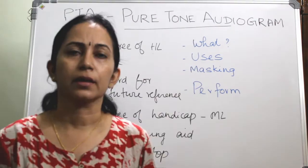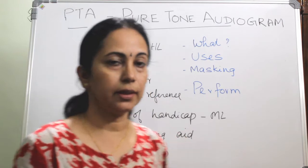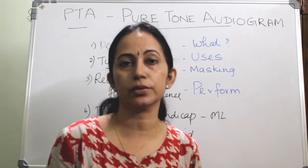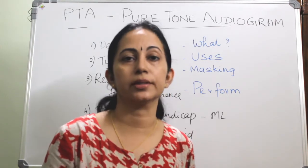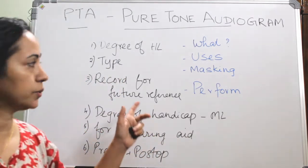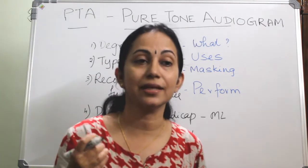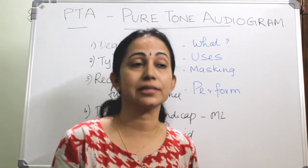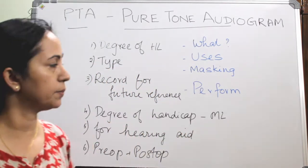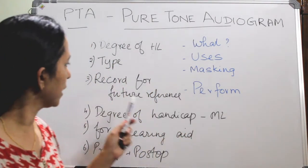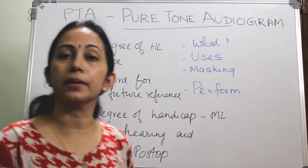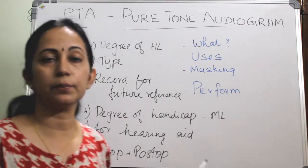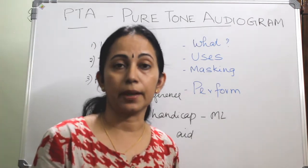The uses of pure tone audiogram include: first, the degree of hearing loss — how much hearing loss the patient has, whether normal or 20 dB, 30 dB, and so on. Second, the type of hearing loss — whether it is conductive, sensorineural, or mixed hearing loss. All this can be determined by performing a pure tone audiogram. Additionally, as it is a permanent record, it can be kept for future references, especially for preoperative and postoperative comparison or assessment.